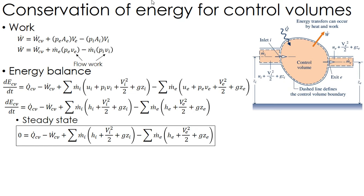In our problems we're dealing with steady state. Once the system ramps up to steady state, properties are not changing, so the change in energy does not change as a function of time. The left side of the equation goes to zero, and we have heat minus work plus energy in minus energy out — where that energy includes flow work, kinetic energy, and potential energy, though many of these are often neglected. The key thing: with a control volume and flow, look up h values not u values.